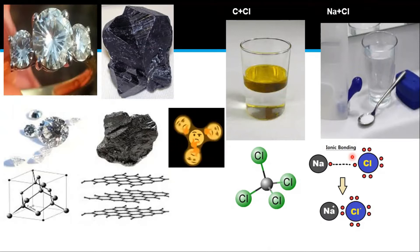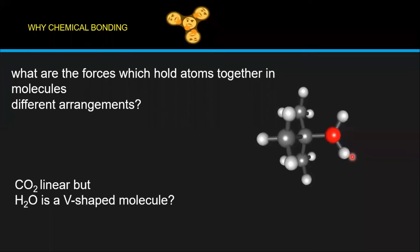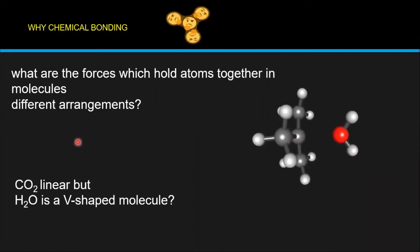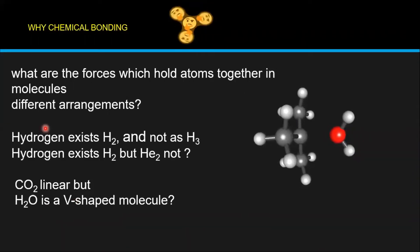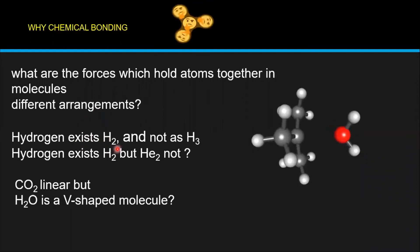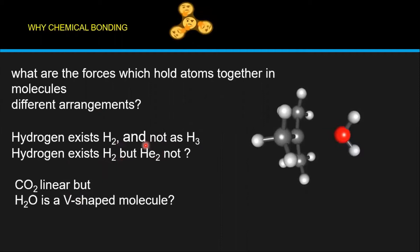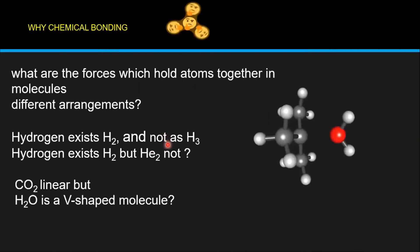Why do these differences arise? Why not NaCl₂? Why not CCl? These are not stable compounds — we will discuss this in the chemical bonding series. Most importantly, why are atoms or molecules held together? What are the forces that exist between them? Why do molecules have different arrangements and shapes — for example, CO₂ is linear and H₂O is V-shaped? Also, hydrogen exists in molecular form as H₂, but helium only exists at the atomic level. Why is a helium molecule not possible? All of these are explained through chemical bonding concepts.